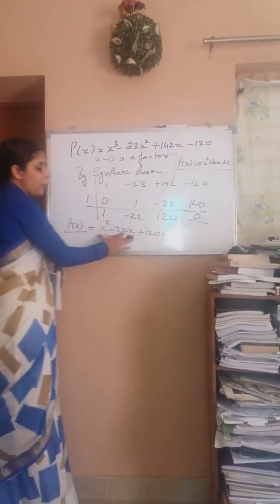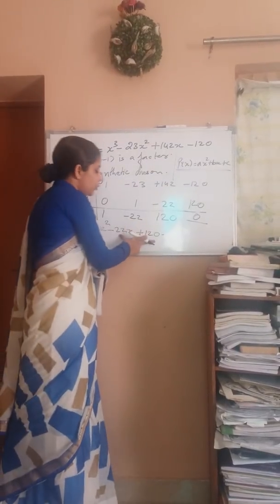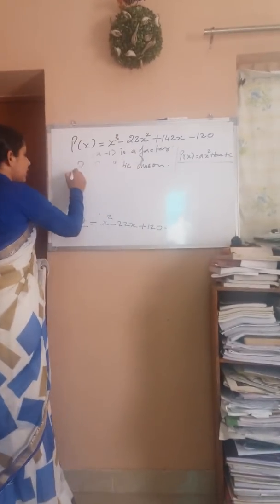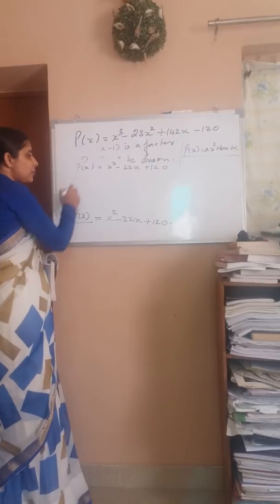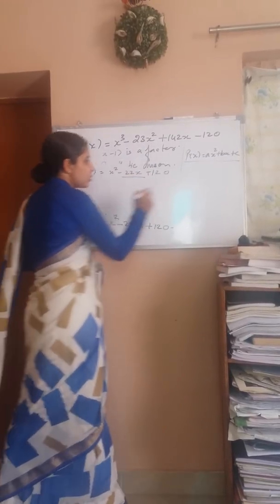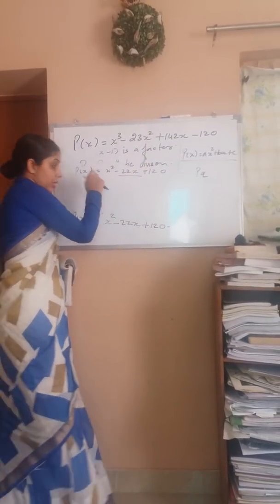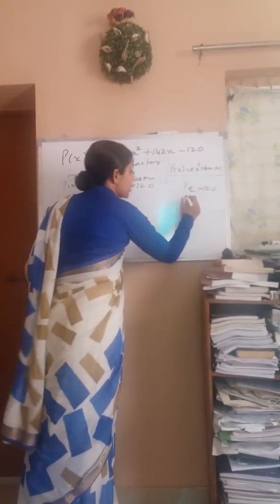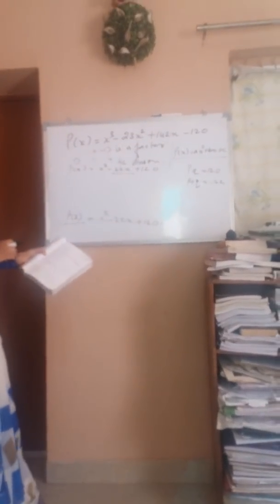Now by the splitting the middle term method, we can solve this quadratic equation and find the other two factors. The quadratic equation is p(x) = x² - 22x + 120. We'll find two numbers p and q such that p × q = 120 × 1 = 120, and p + q equals the coefficient of x, that is -22.